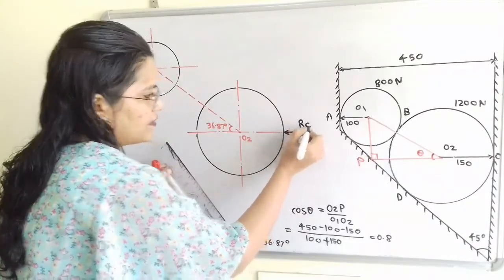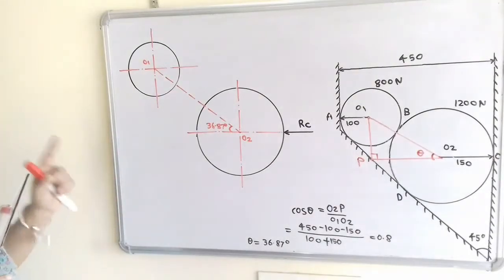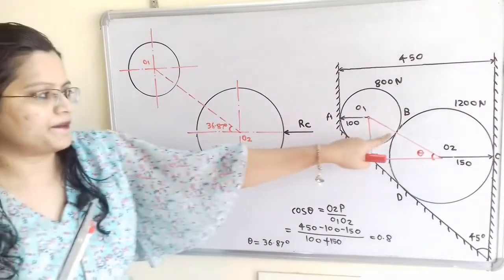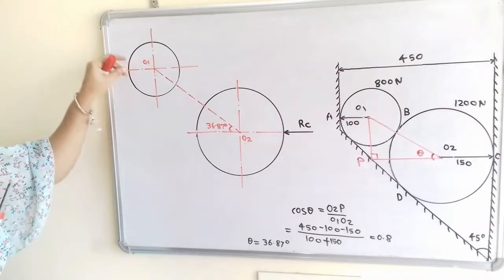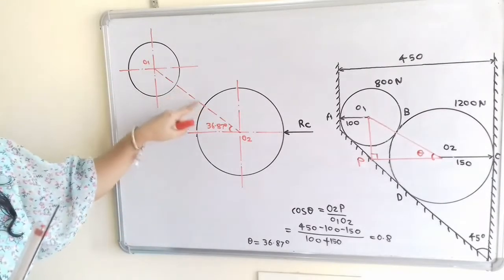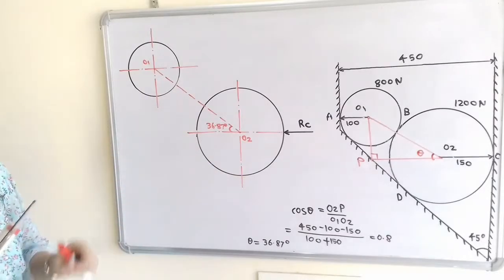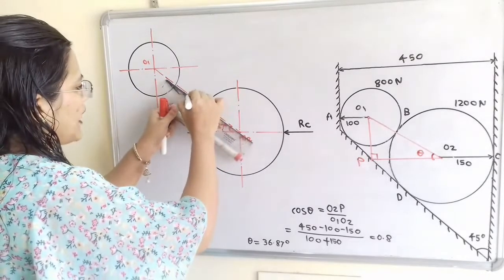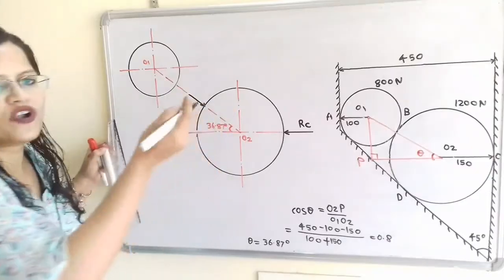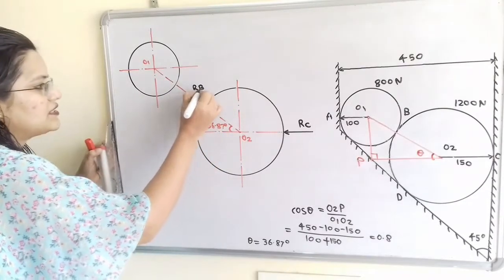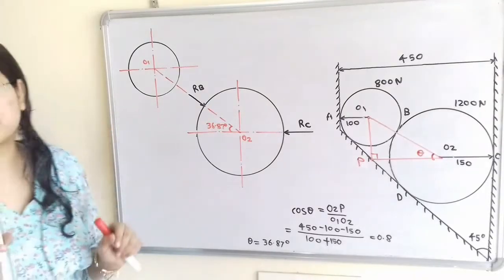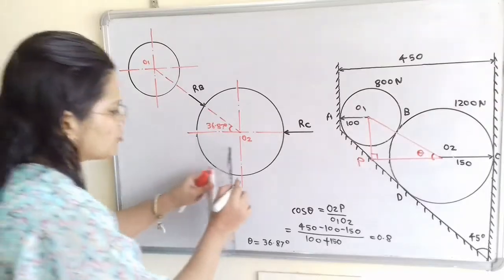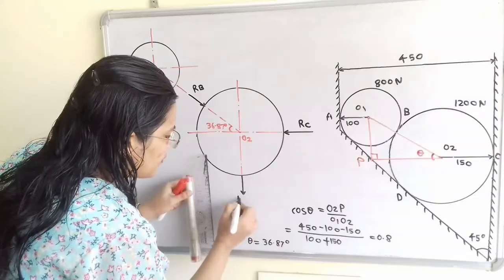The reaction at C is RC. The two cylinders are in contact at point B, where the cylinder with center O1 applies a reaction force on the cylinder with center O2 along the line joining centers O1 and O2. This reaction is known as RB. The weight of cylinder O2 acts vertically downward through its center and equals 1200 N.